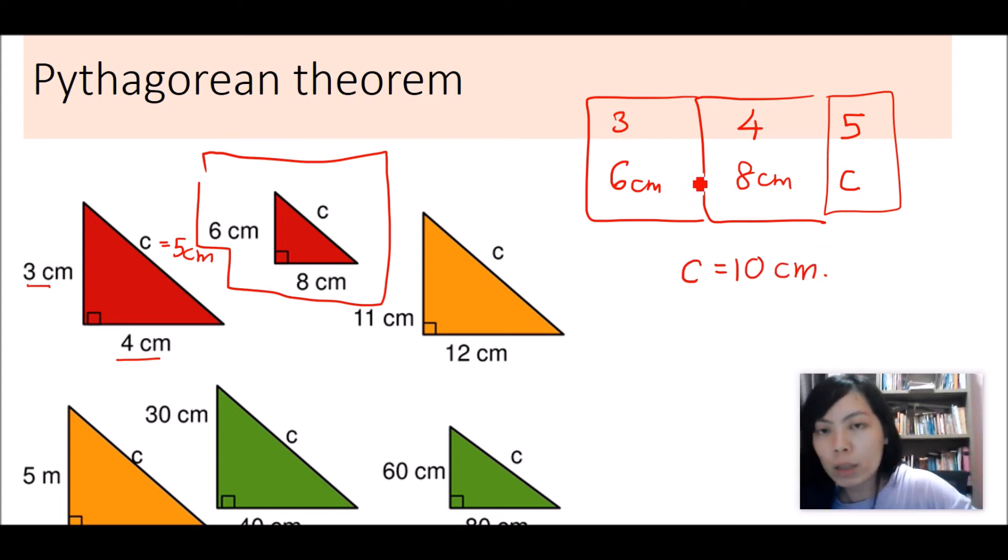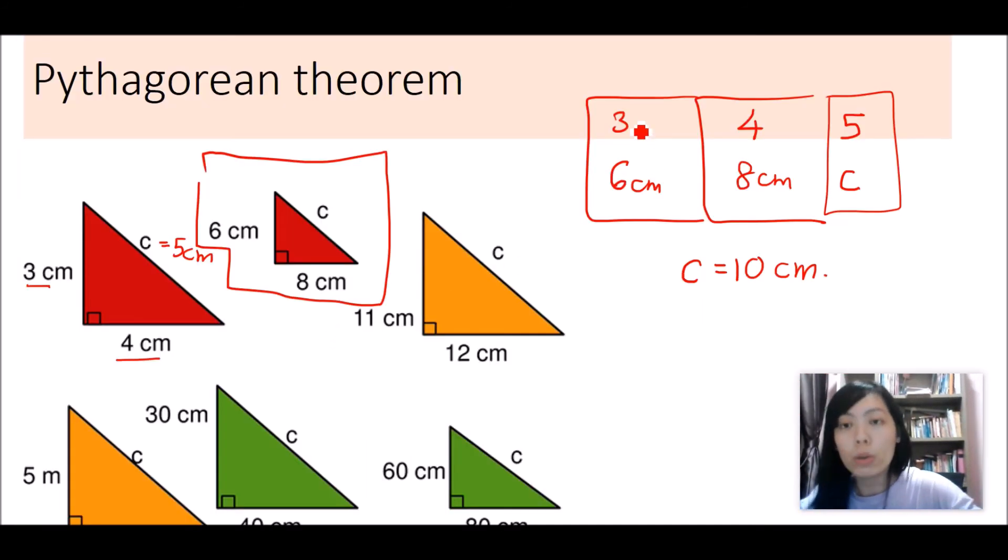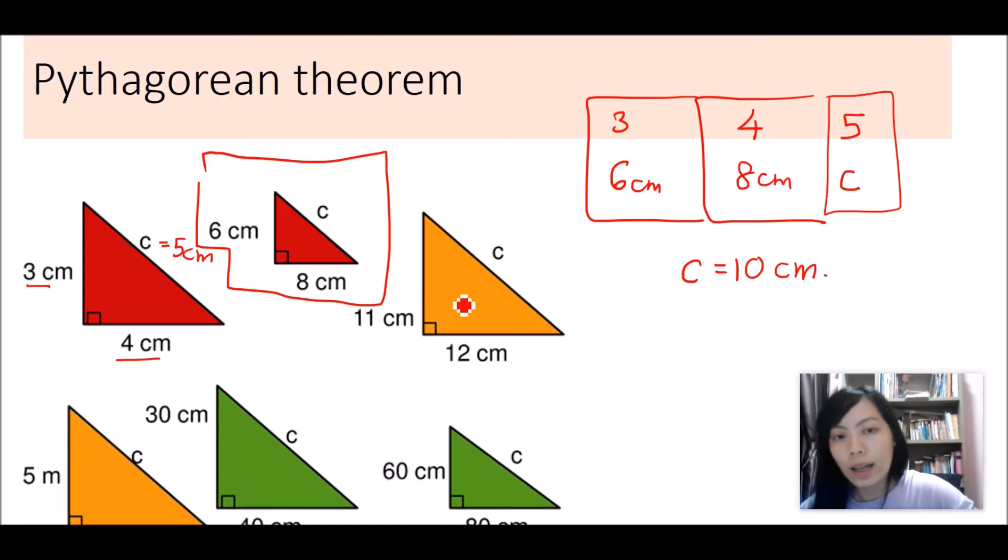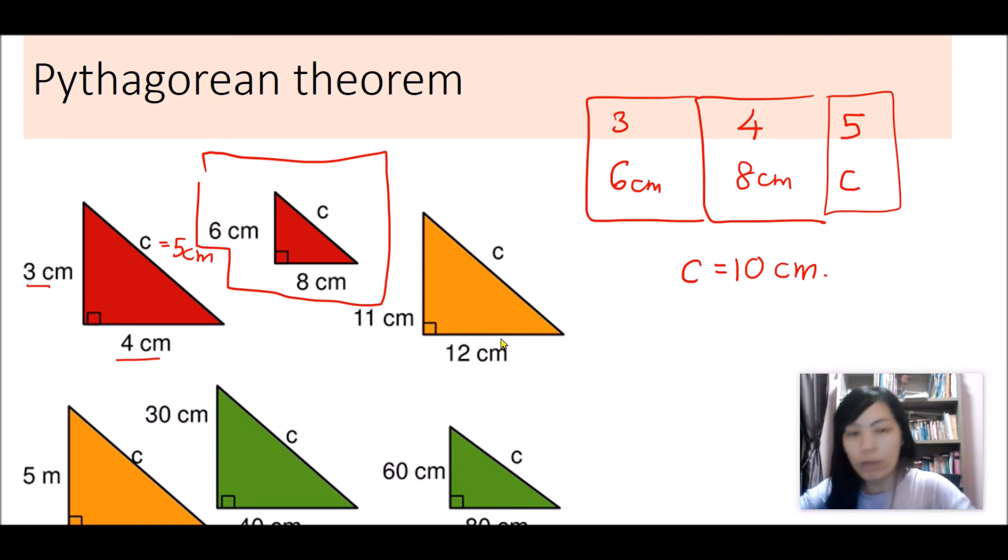I am doing this by memorizing the Pythagorean triples without even using a calculator. But of course, this cannot solve all problems, especially when the length of the side is a decimal number. Still, you can solve it by using a calculator with the same formula.